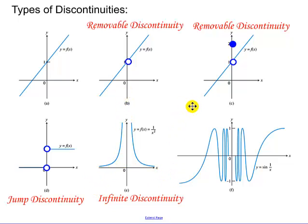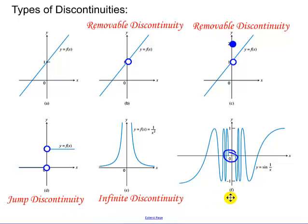And then the last one is a function where you oscillate up and down, up and down — that's why F is an oscillating discontinuity.